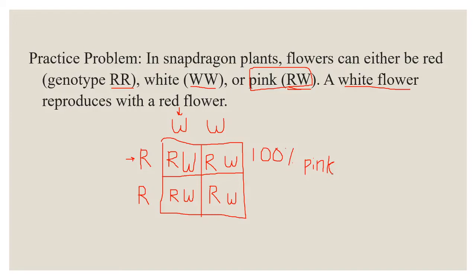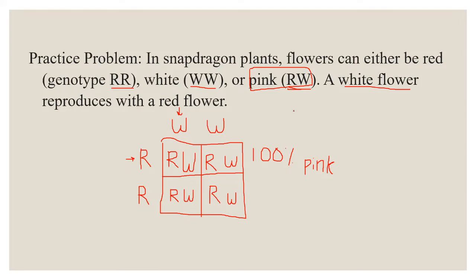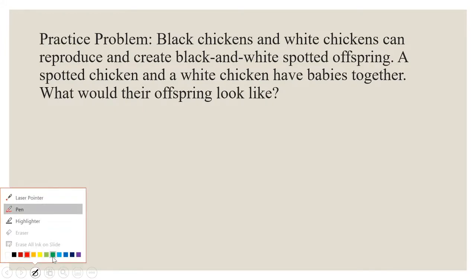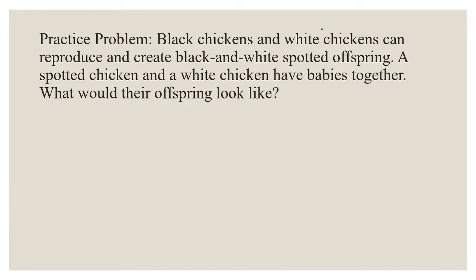So very similar to what we did yesterday, but we now have this third option — it's not just red or white, we can have this third mixed option. That's the only difference. So there's a second special situation, and honestly it works pretty much the same as the first one. With incomplete dominance the traits blend together, but with codominance it works the same way except instead of the two traits being blended together, you actually see both traits separately at the same time — neither one is covering the other up, they're not blending together, they're just both present. You can have white chickens and black chickens make babies that are white and black — they have spots of both. That's the example we're going to go with today.